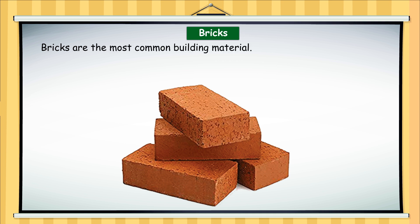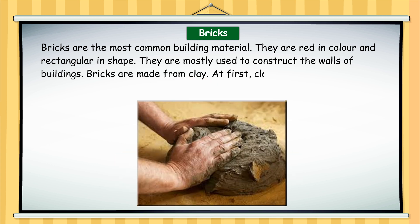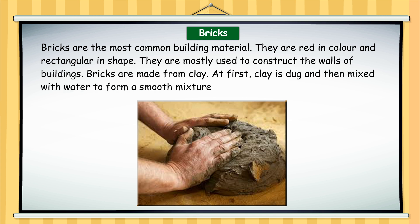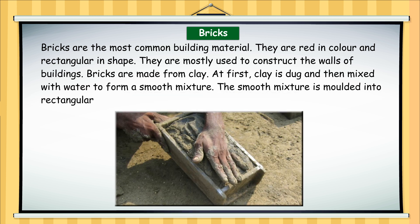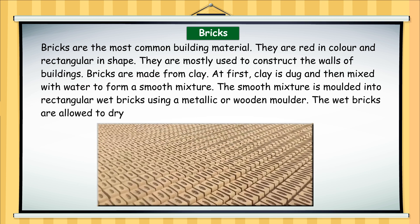Bricks are the most common building material. They are red in colour and rectangular in shape. They are mostly used to construct the walls of buildings. Bricks are made from clay — clay is dug and then mixed with water to form a smooth mixture. The smooth mixture is moulded into rectangular wet bricks using a metallic or wooden moulder. The wet bricks are allowed to dry in the sun.